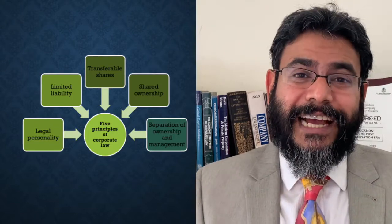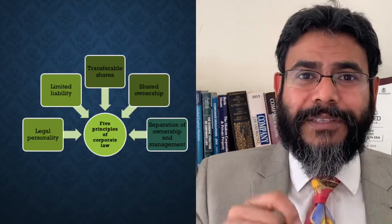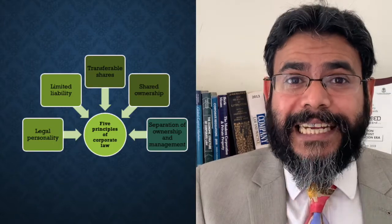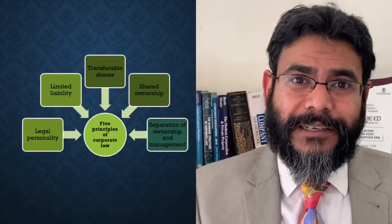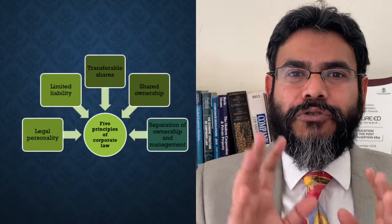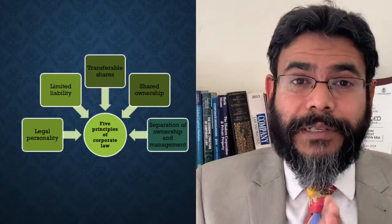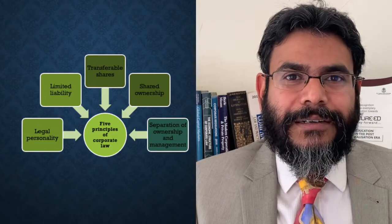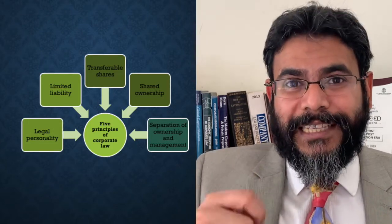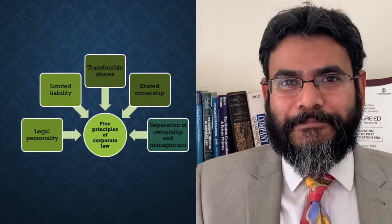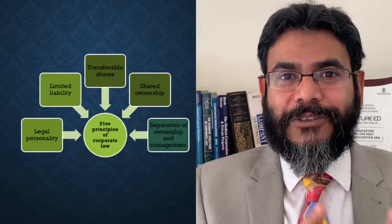Dr. Vijay Mallya, as the promoter and majority shareholder of Kingfisher Airlines, is liable to pay off the debt owed by Kingfisher Airlines only to the extent of his shareholding, which he has already paid to Kingfisher Airlines. However, under normal circumstances, the lenders would not be able to reach out to Vijay Mallya and say that now you must pay from your personal finances. But what happened here is that Dr. Vijay Mallya had executed a personal guarantee in favour of Kingfisher Airlines, saying that if Kingfisher Airlines is unable to repay this loan, then he would pay personally — which is why the lenders are going after Dr. Vijay Mallya.